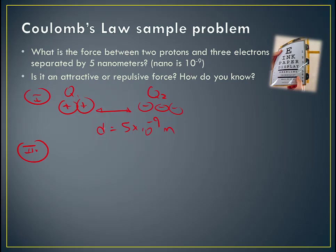Step two, we're going to list all our knowns and unknowns. Well, we already have the distance here which I wrote down. We're trying to find force of electrostatic attraction. That's my unknown. And then we know that Q1 is two protons.